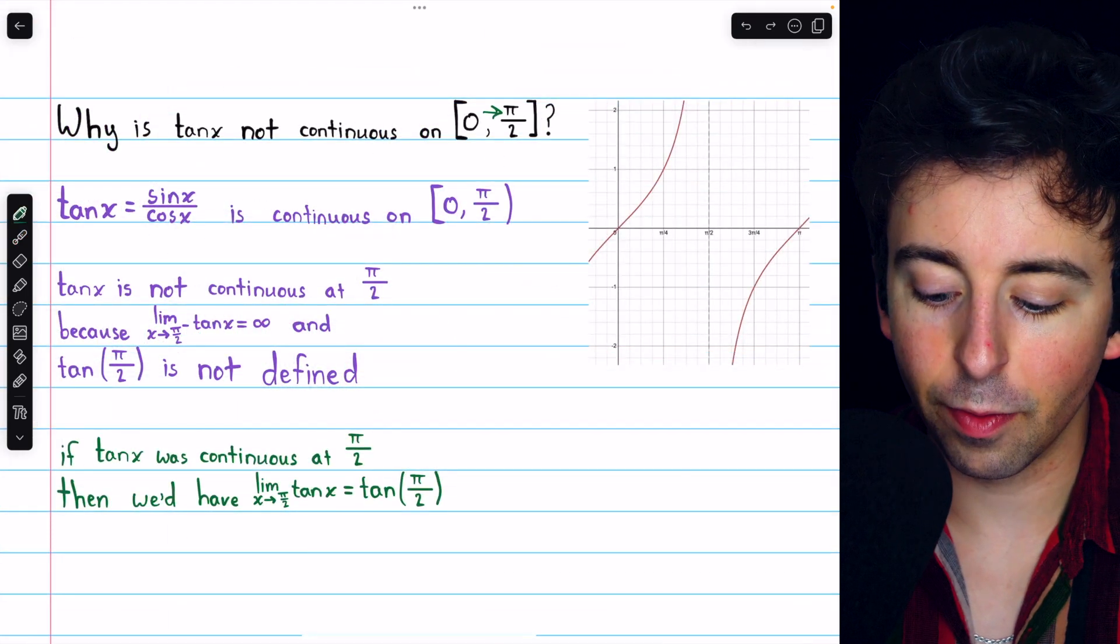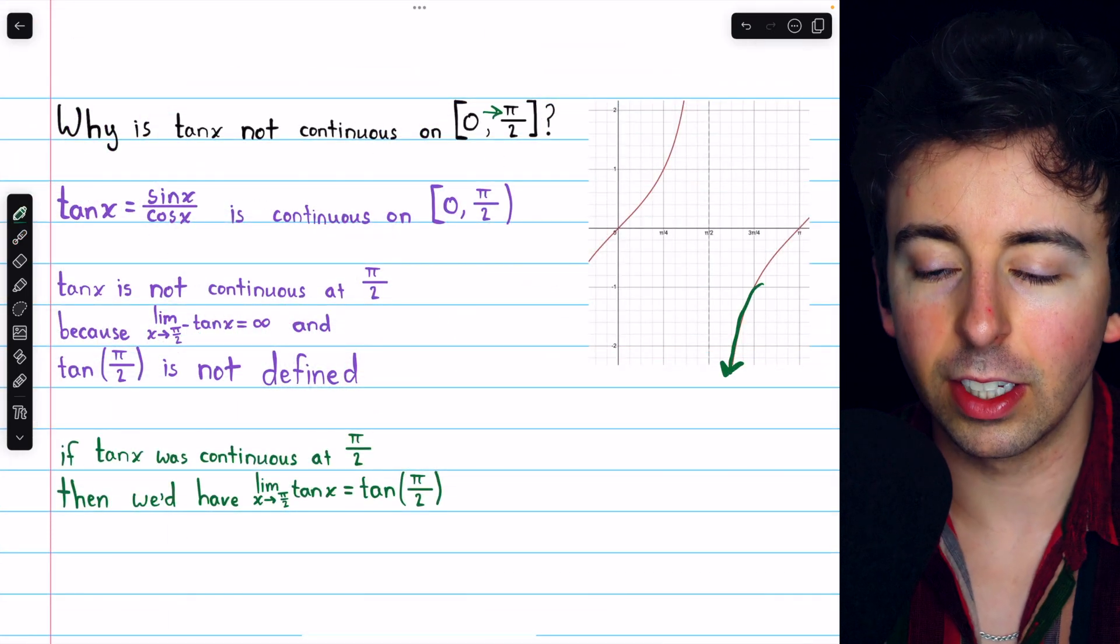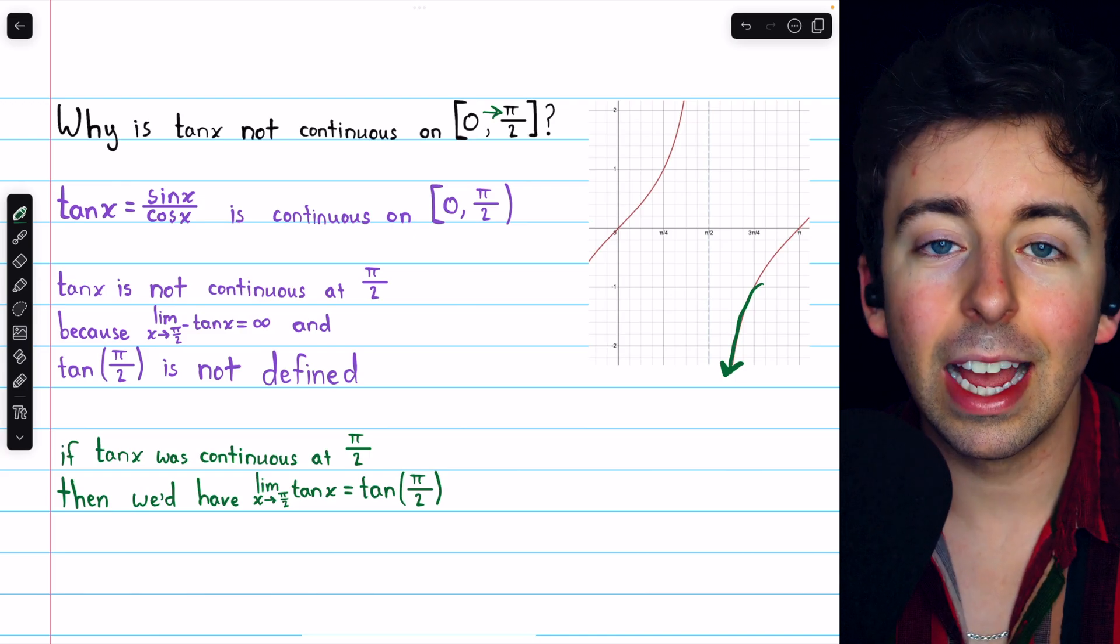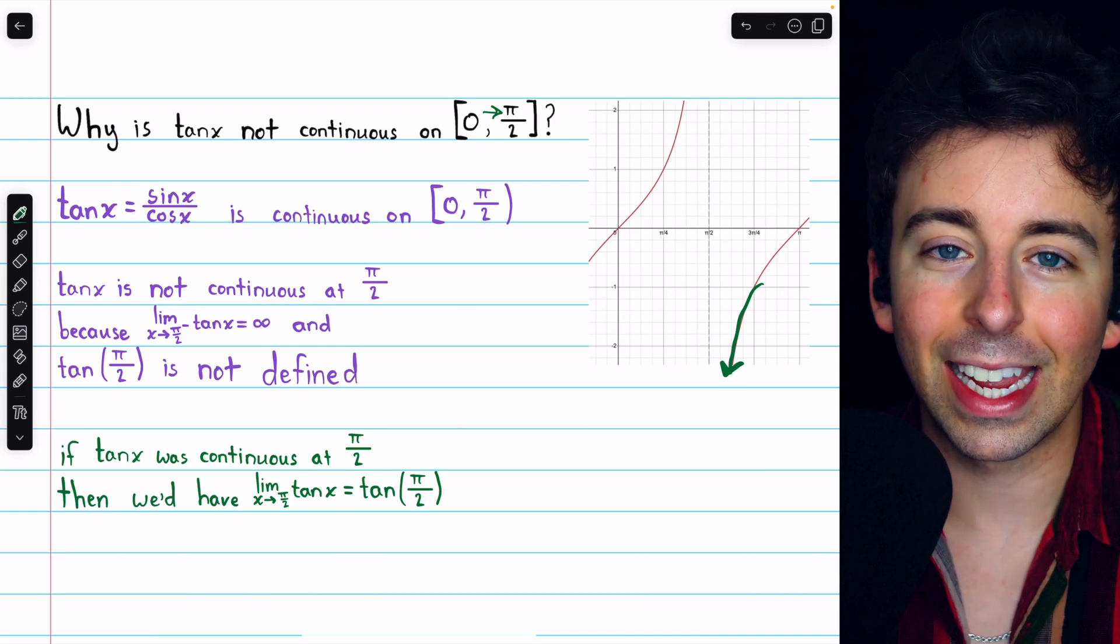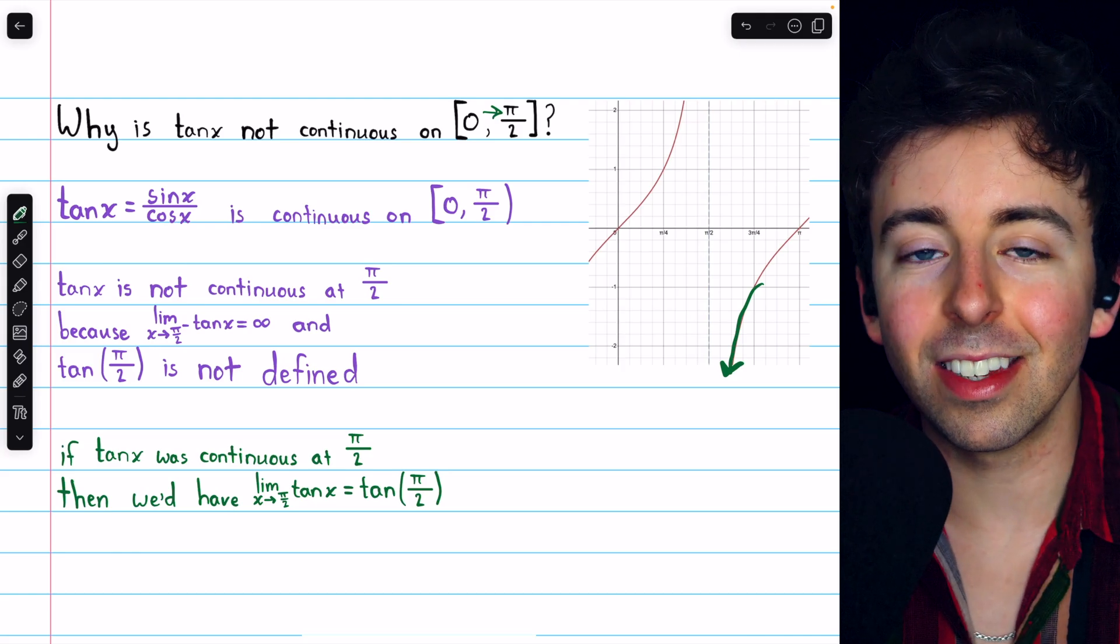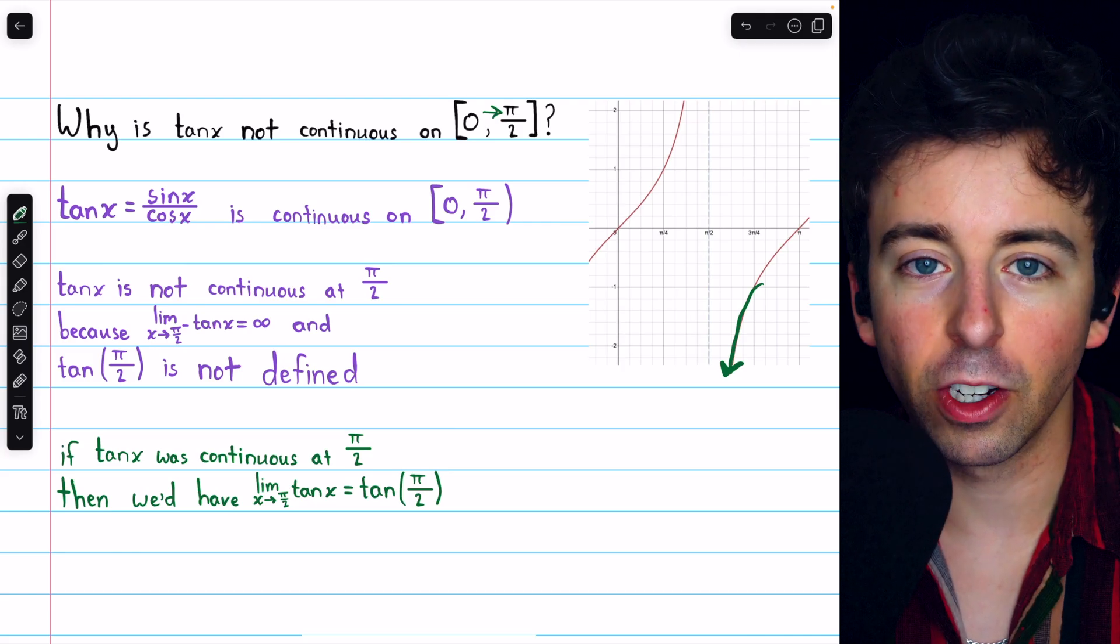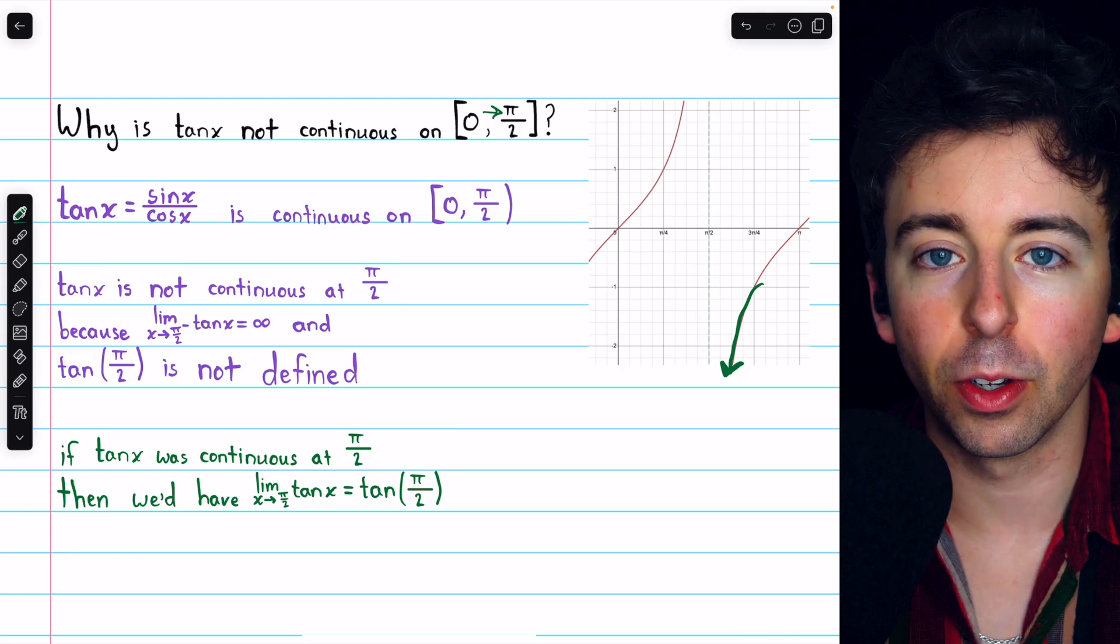From the graph, we can see that from the right, tangent is actually going to negative infinity as we approach pi over 2. And that's because cosine is approaching zero from the negative direction if we approach pi over 2 from the right.